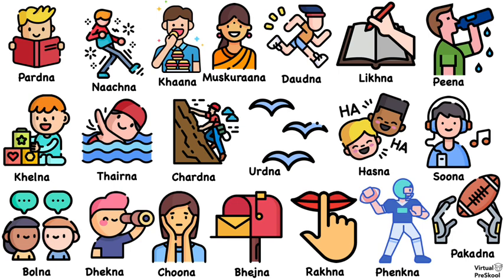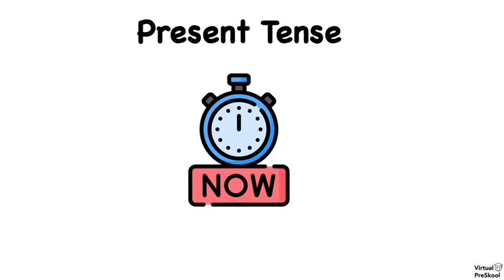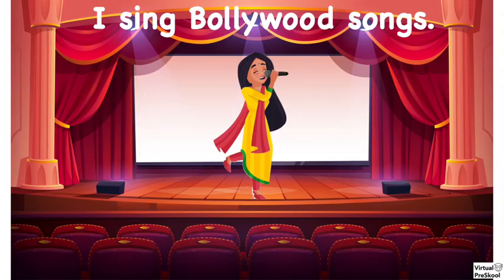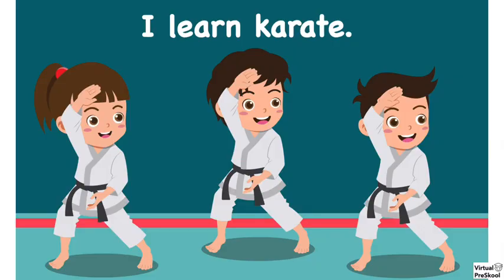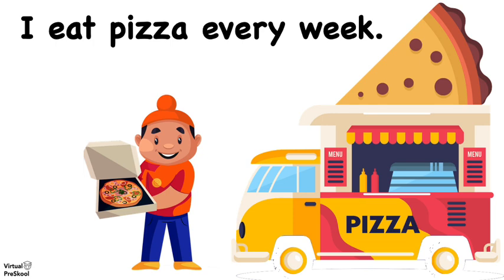As you can see on this page, there are a lot of verbs. You have learned the basics of verb conjugation in present tense. What does present tense mean? It means events happening now, in the present, or things that you do currently. For example: I sing Bollywood songs, I learn karate, or I eat pizza every week. You aren't necessarily doing those things right now, but they are a part of your life right now.